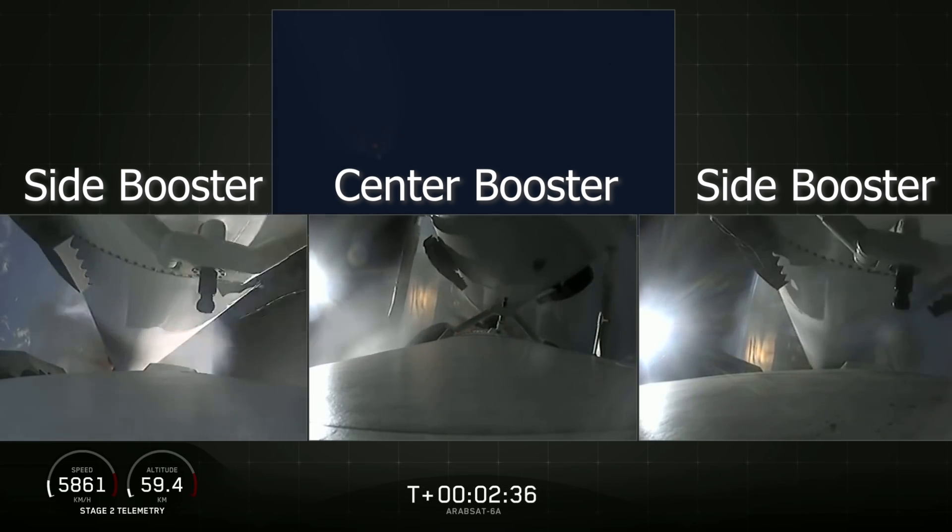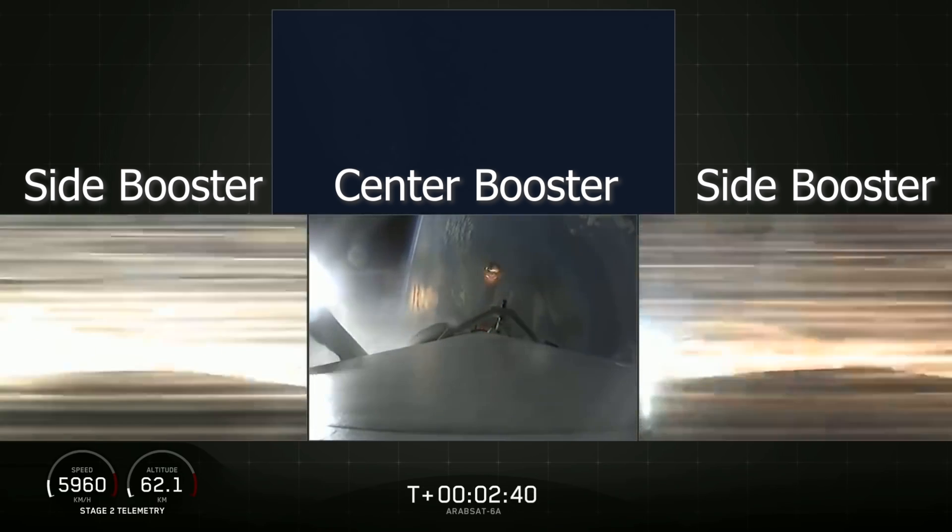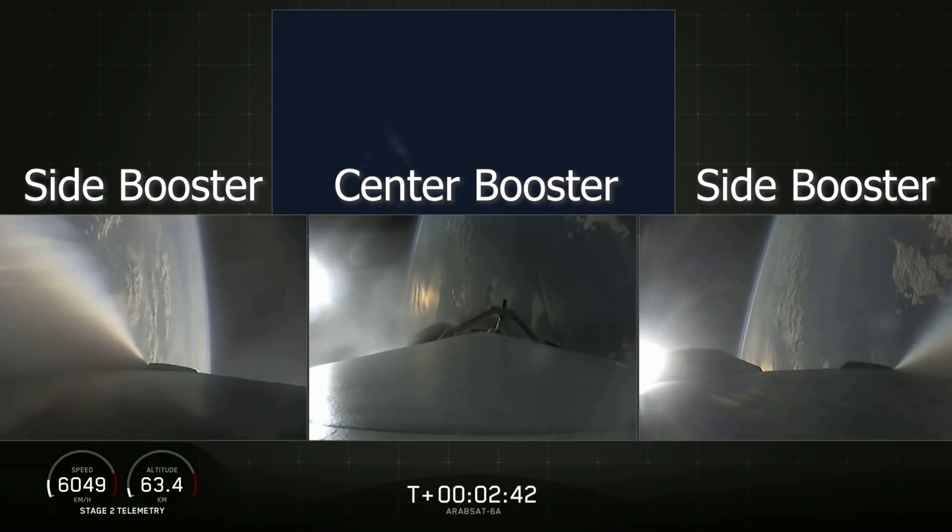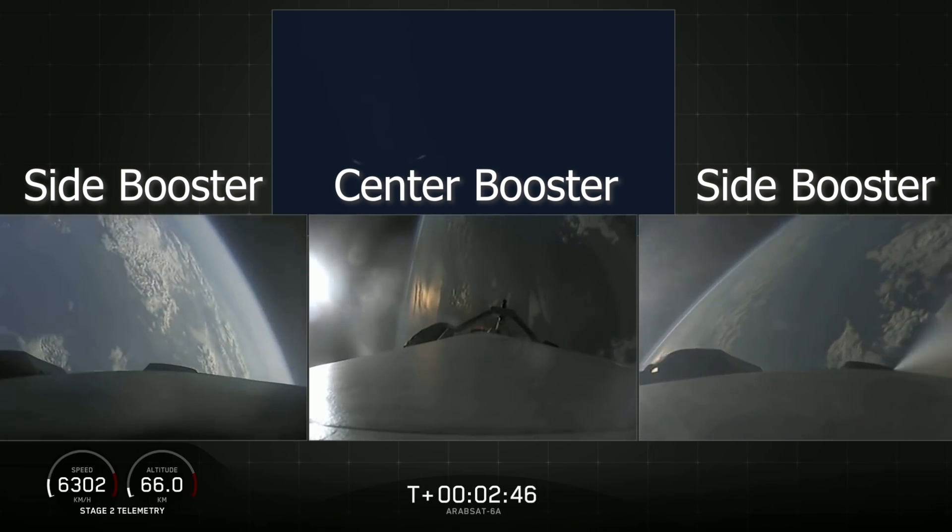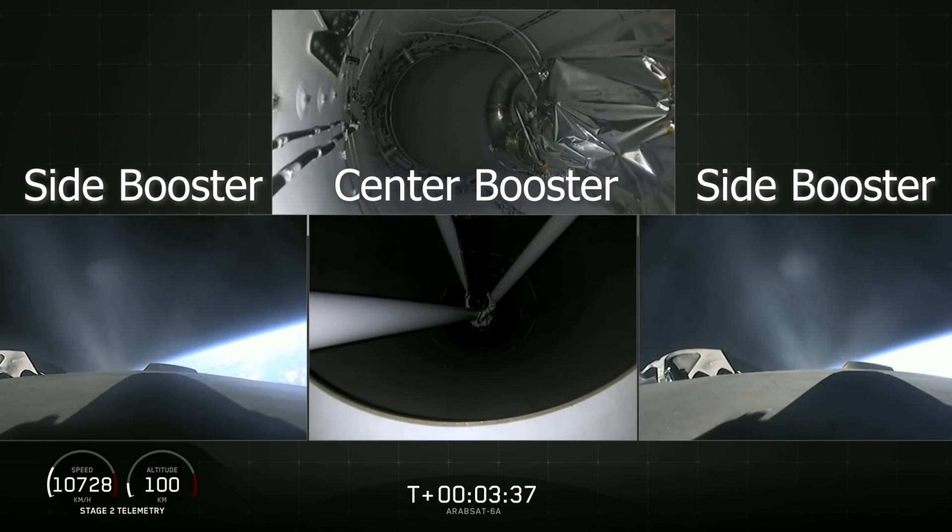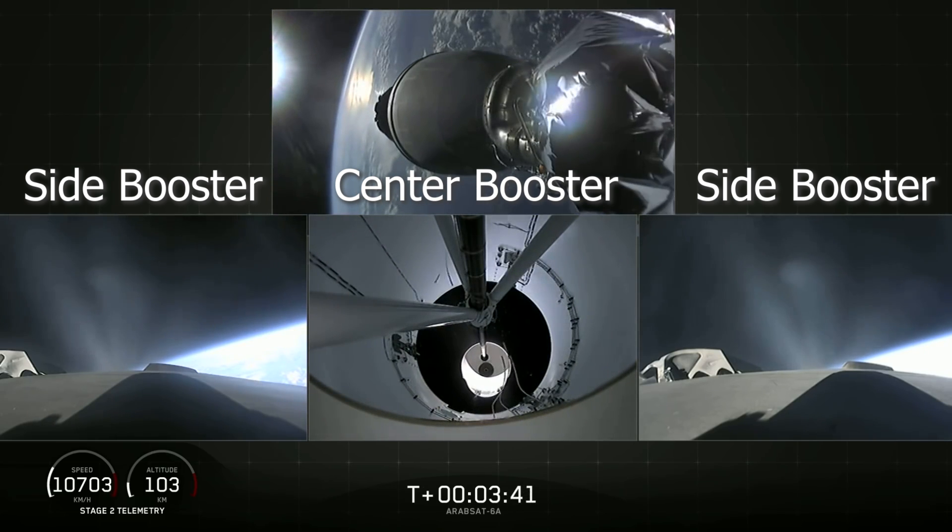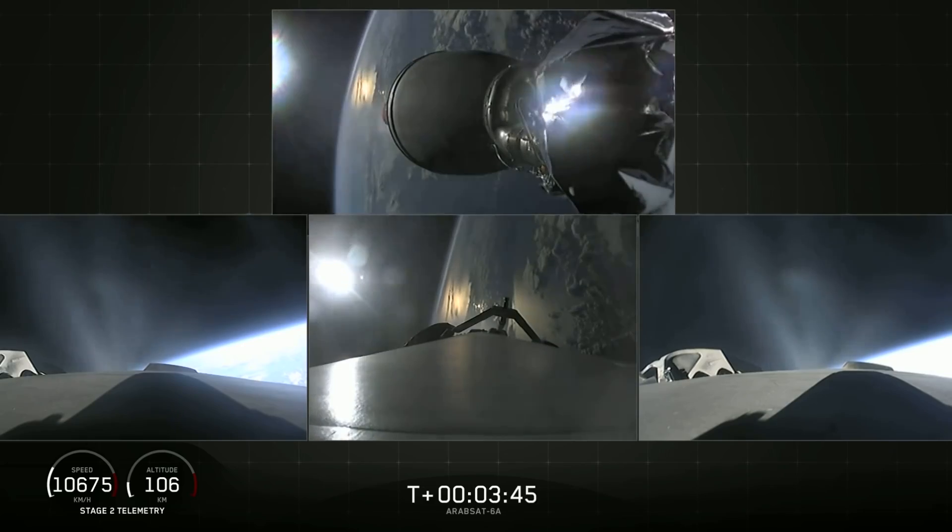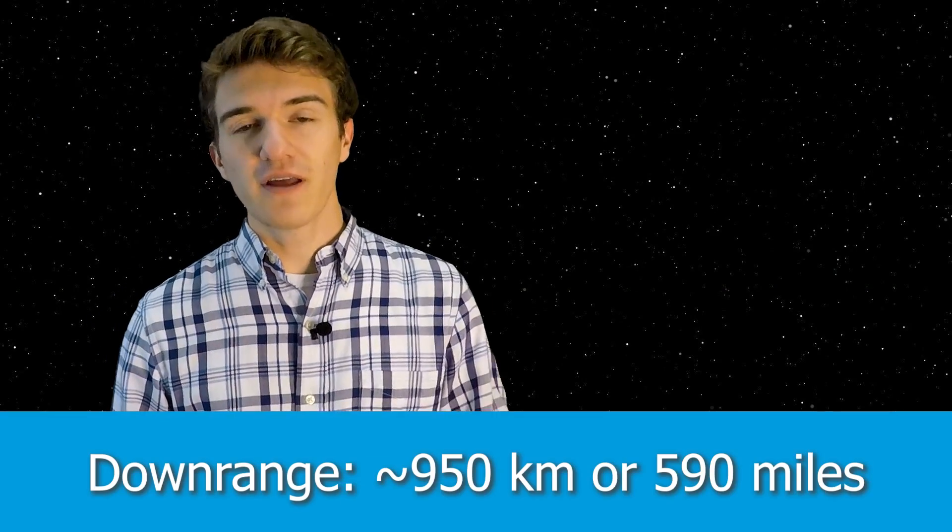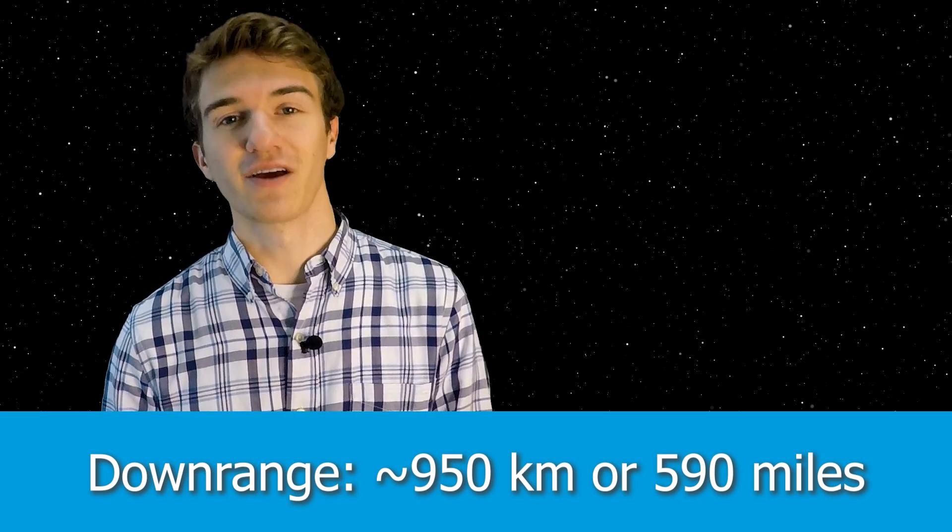However, the Falcon Heavy continued on its trajectory until the two side boosters came off first. They run out of fuel first, so they came back and headed towards Cape Canaveral to land, whereas the center booster continued to push the upper stage a little bit longer until it too separated. The second stage ignited and continued on its path into orbit, whereas the center core stage started to come back towards its drone ship.